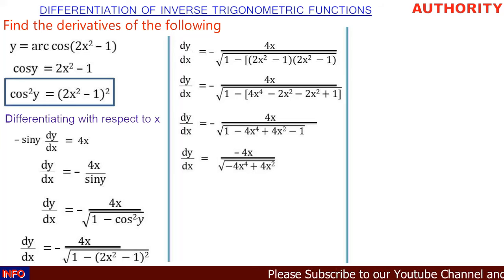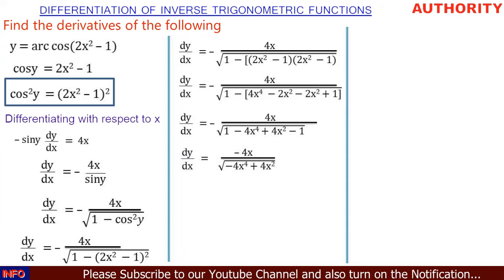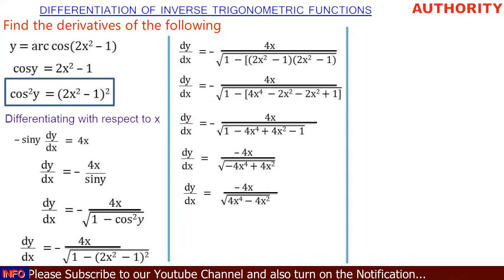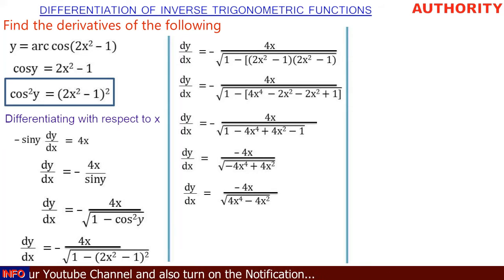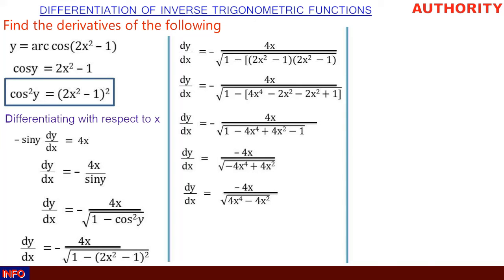So dy/dx = -4x / √(-4x⁴ + 4x²). The value inside the square root can be rewritten as √(4x⁴ - 4x²) by dividing by -1 and changing signs. So dy/dx = -4x / √(4x⁴ - 4x²).